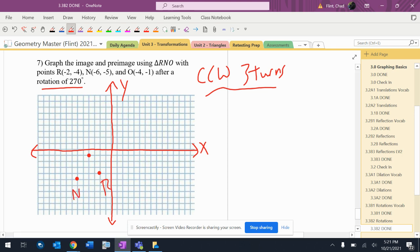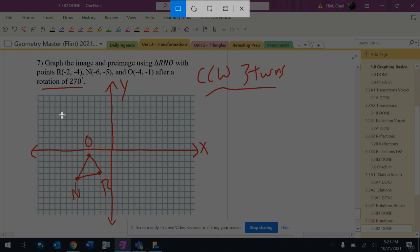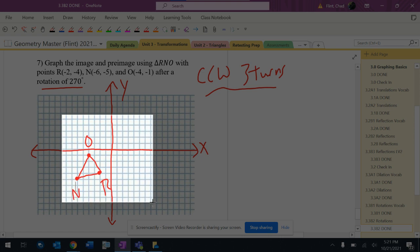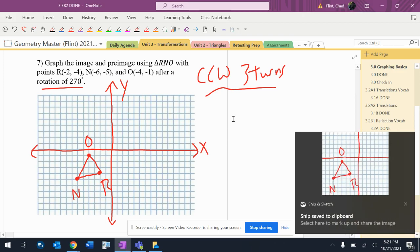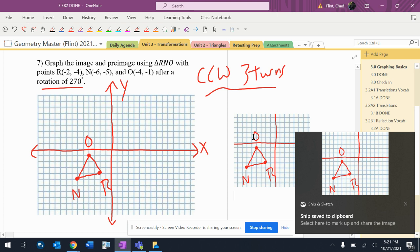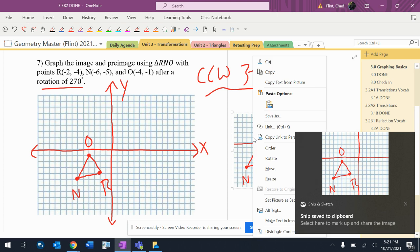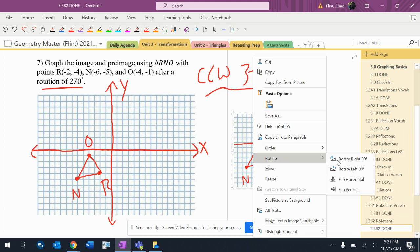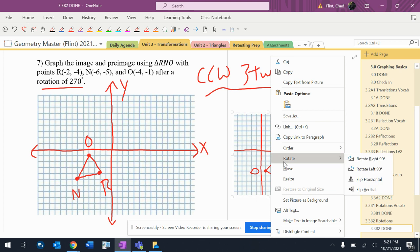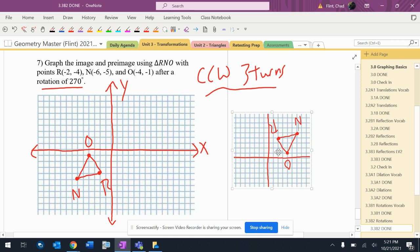So I've got R, N, and O. I've got that right there. I'm going to rotate it 270. I'm going to paste this over here. I'm going to go counterclockwise 270, so that's one, one, two, three.